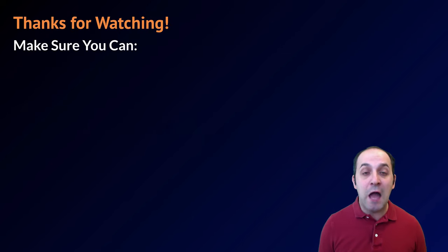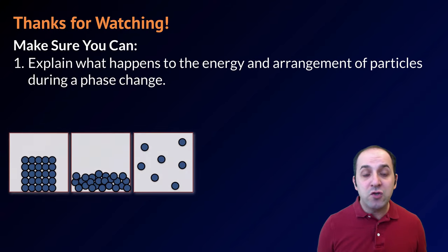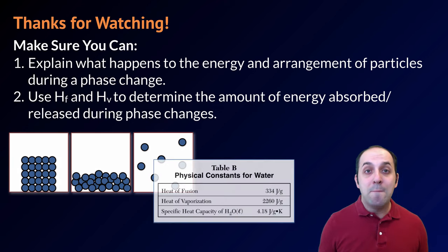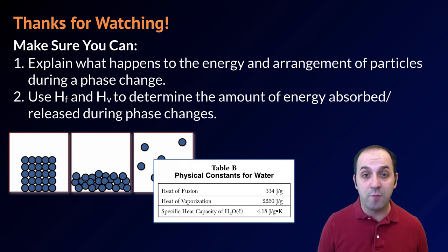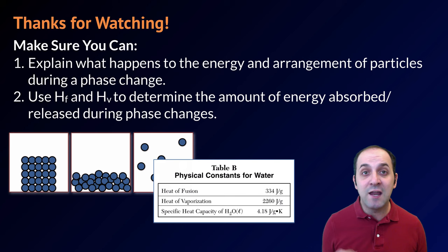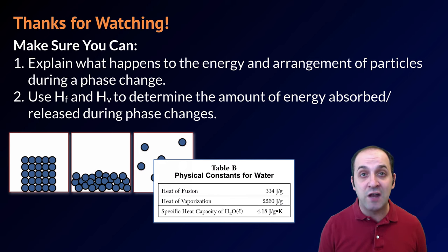Thanks for watching our discussion about how to calculate the amount of energy used to go through particular phase changes. Make sure you can explain what happens to the energy and the arrangement of particles during a phase change, and that you can use the heat of fusion and heat of vaporization to determine the amount of energy absorbed or released. If you have questions, leave them in the comments below or get in touch through the info field. Thanks again for watching — have a great day!